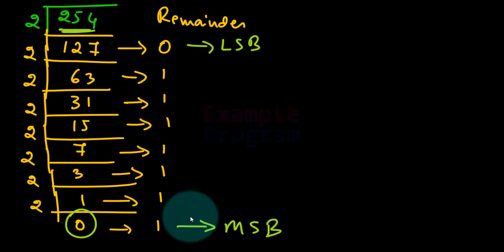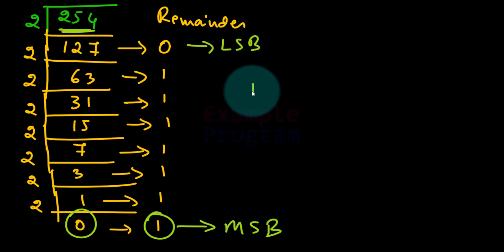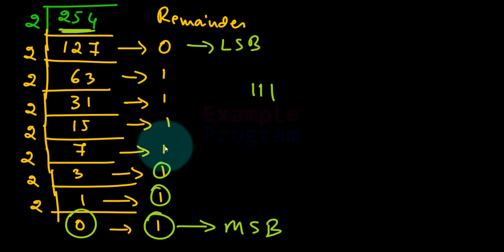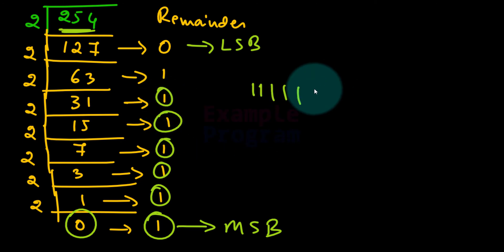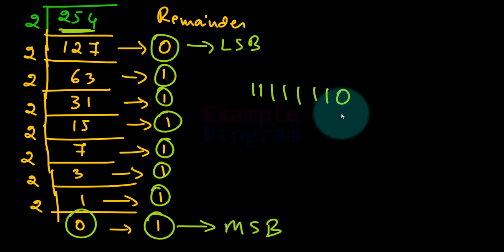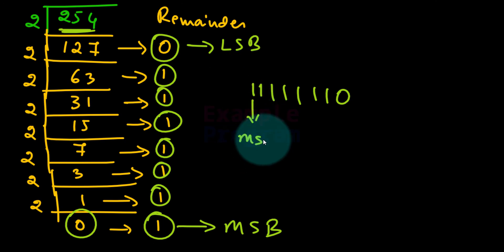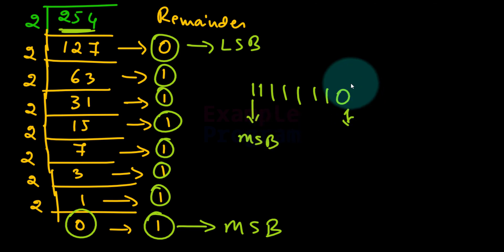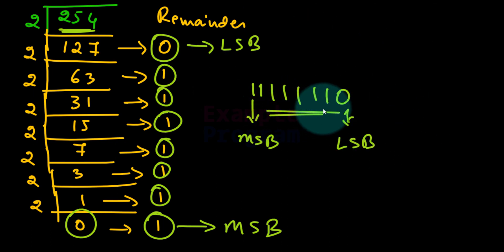While writing this number in binary we start with the most significant bit, so from left to right it will be 1, 1, 1, 1, 1, 1, 1, and finally the least significant bit which is 0. The number on the left side is the most significant bit and the number on the right side is the least significant bit. So 11111110 is the binary representation of 254.